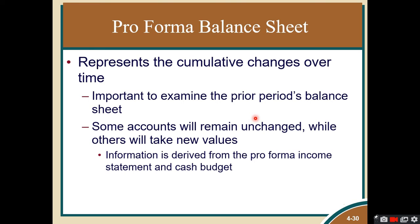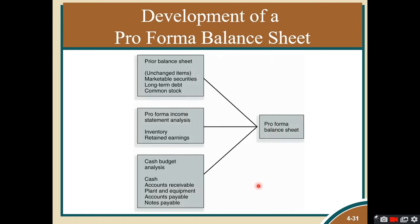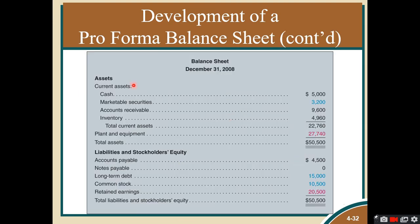We can now prepare the pro forma balance sheet by combining all information provided — the prior balance sheet, pro forma income statement, production inventory data, cash budget, and other inputs. Items shown in a different color were not derived from our computations: the cash of $5,000 is the desired cash balance, marketable securities are not computed, and accounts receivable of $9,600 is based on the uncollected portion of sales.